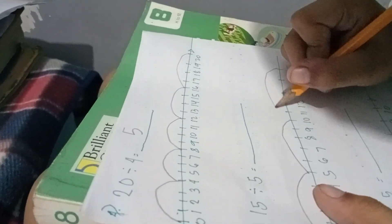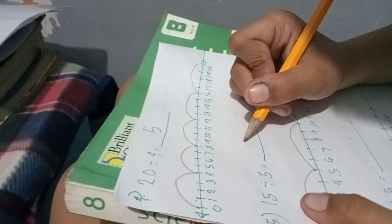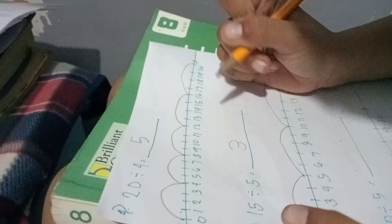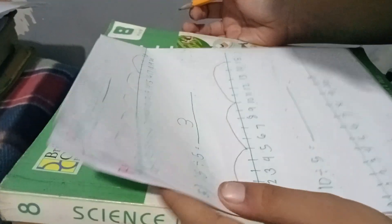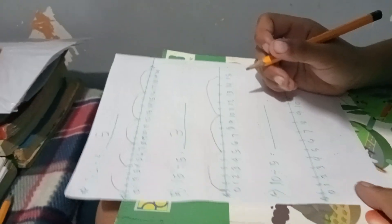The next answer, Tyron: 15 divided by 5. He started to answer this. The answer is 3, good job. And the last is 10 divided by 5. We have your number line from 0 to 10. Try to continue, Tyron.